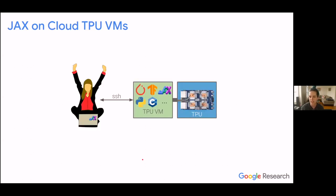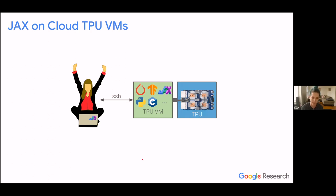Cloud TPU VMs are a new way to access cloud TPUs where you have a VM running directly on the TPU host. You just have SSH access to the TPU host VM and you can run anything you want — JAX code, PyTorch, TensorFlow, random Python code, C++, whatever. It's really just a regular VM that happens to have some TPUs attached to it.